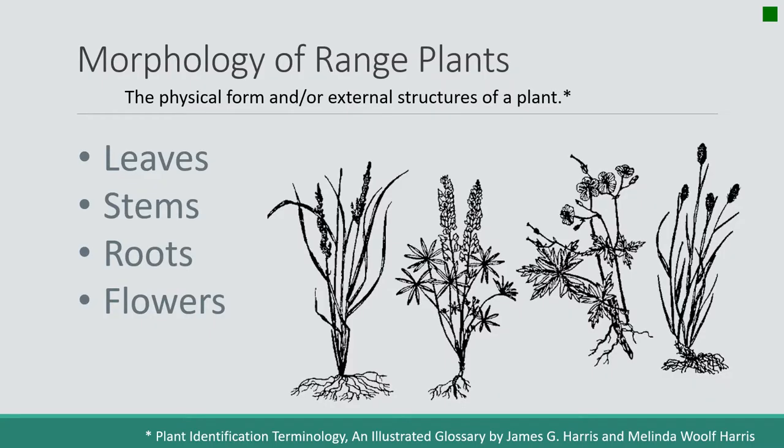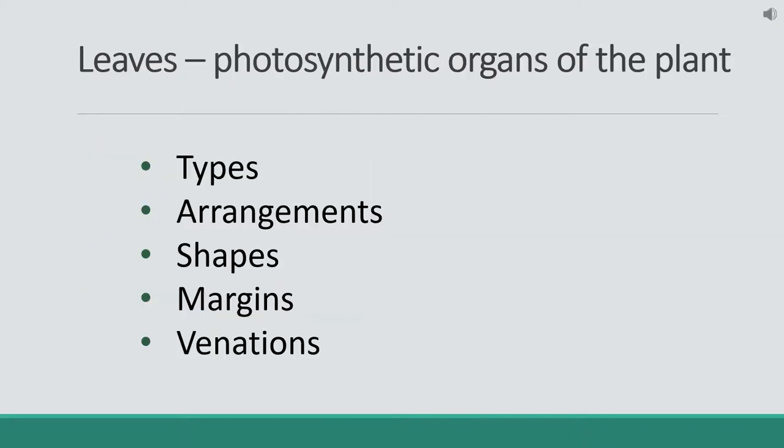So now we're getting into the morphology of range plants. This is what you're picturing in your head when you imagine a plant — a grass or a forb — you're imagining a collection of leaves, stems, roots, and flowers. We'll begin with the leaves, which are the photosynthetic organs of the plant. There are many different types, arrangements, shapes, margins, and venations that help us differentiate one plant from another.